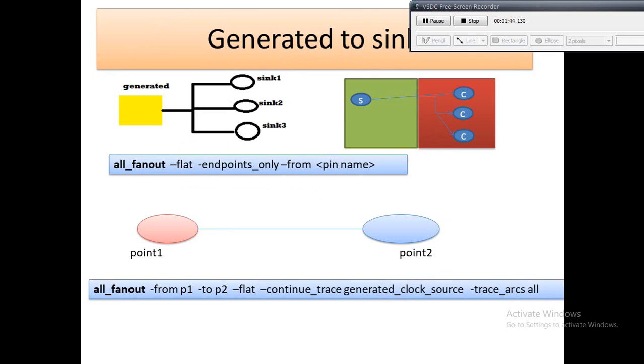Now to trace from generated clock to different syncs or flops, we usually use all_fanout command. This command is widely used to check the connectivity. Moreover, we can filter using some switches such as -levels and -pin_levels. I mean you can count the maximum number of cell levels to traverse. And suppose you just want to check the connectivity of any two pins in the design, you can check with the given commands below.